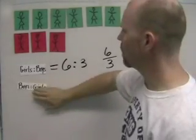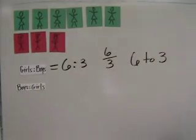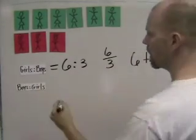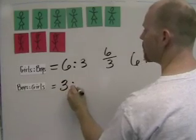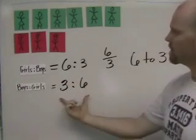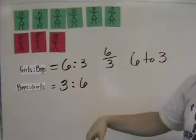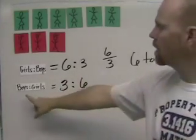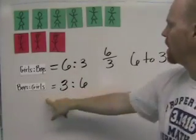What if I wanted to know the ratio of boys to girls? Well, in this case, I would say then the ratio is three to six. Three to six and six to three are not the same thing. They're different. Here, there's three boys and six girls.